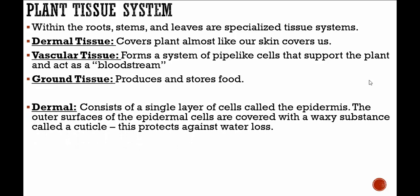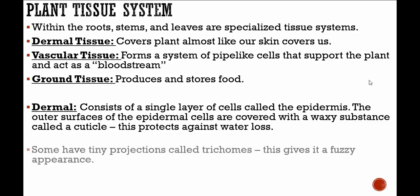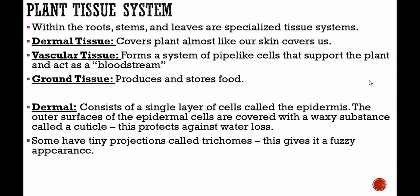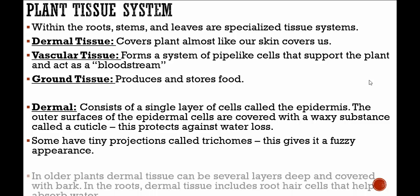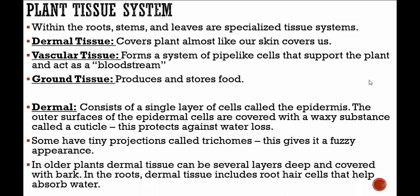The dermal tissue consists of a single layer of cells called the epidermis. The outer surfaces of the epidermal cells are covered with a waxy substance called a cuticle, which helps protect against water loss. Some have tiny projections called trichomes, giving a fuzzy appearance. In older plants, dermal tissue can be several layers deep and covered with bark. In the roots, dermal tissue includes root hair cells that help absorb water.